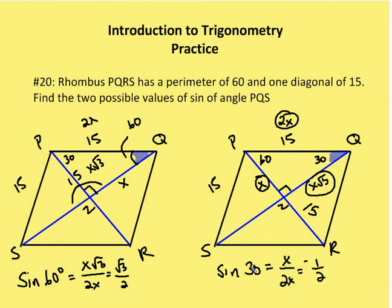So the two possible outcomes: one where the angle measure is 60 degrees leaves us a result of √3/2, and the other possibility where the angle measure is 30 degrees leaves us with sine of 30, which equals 1/2.